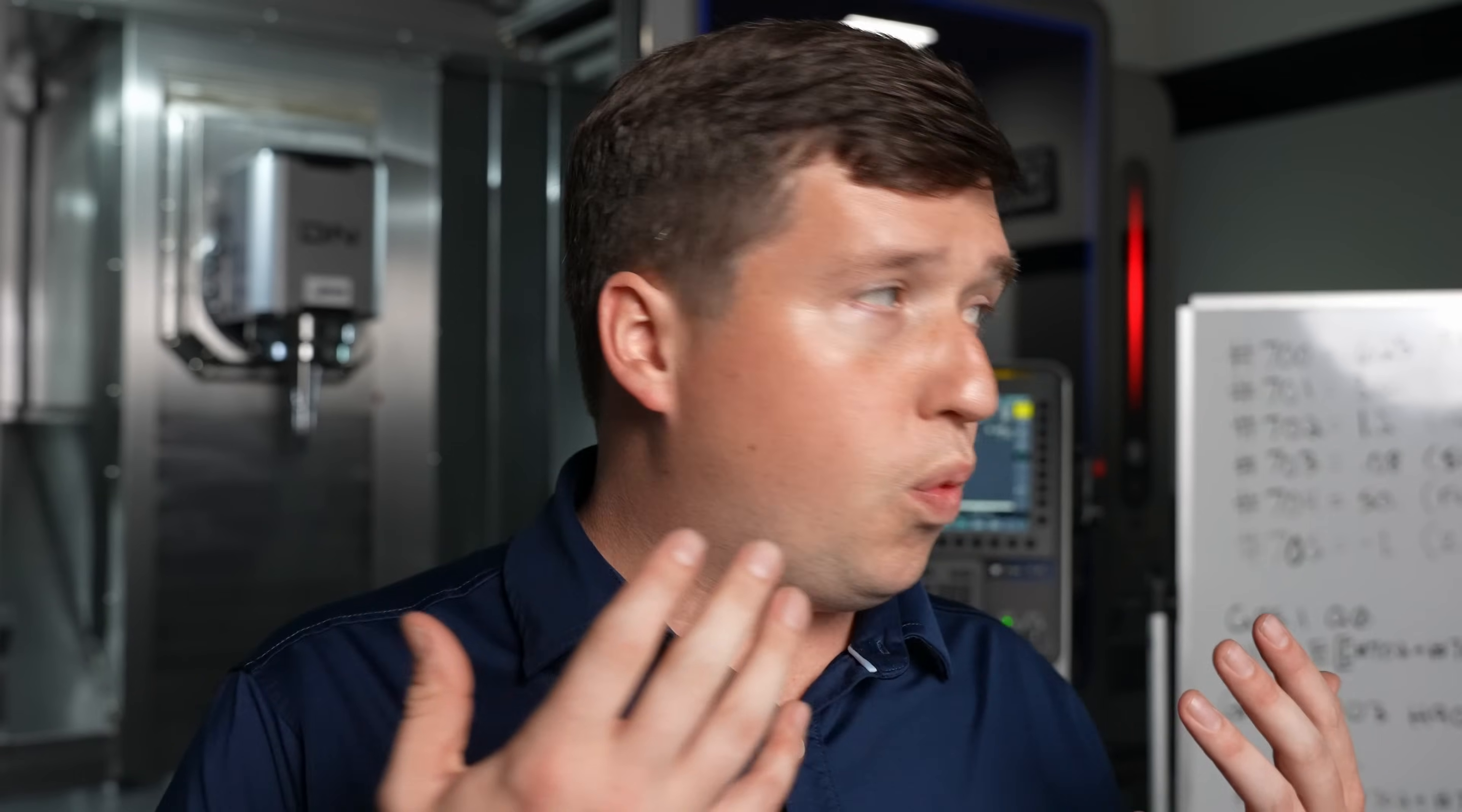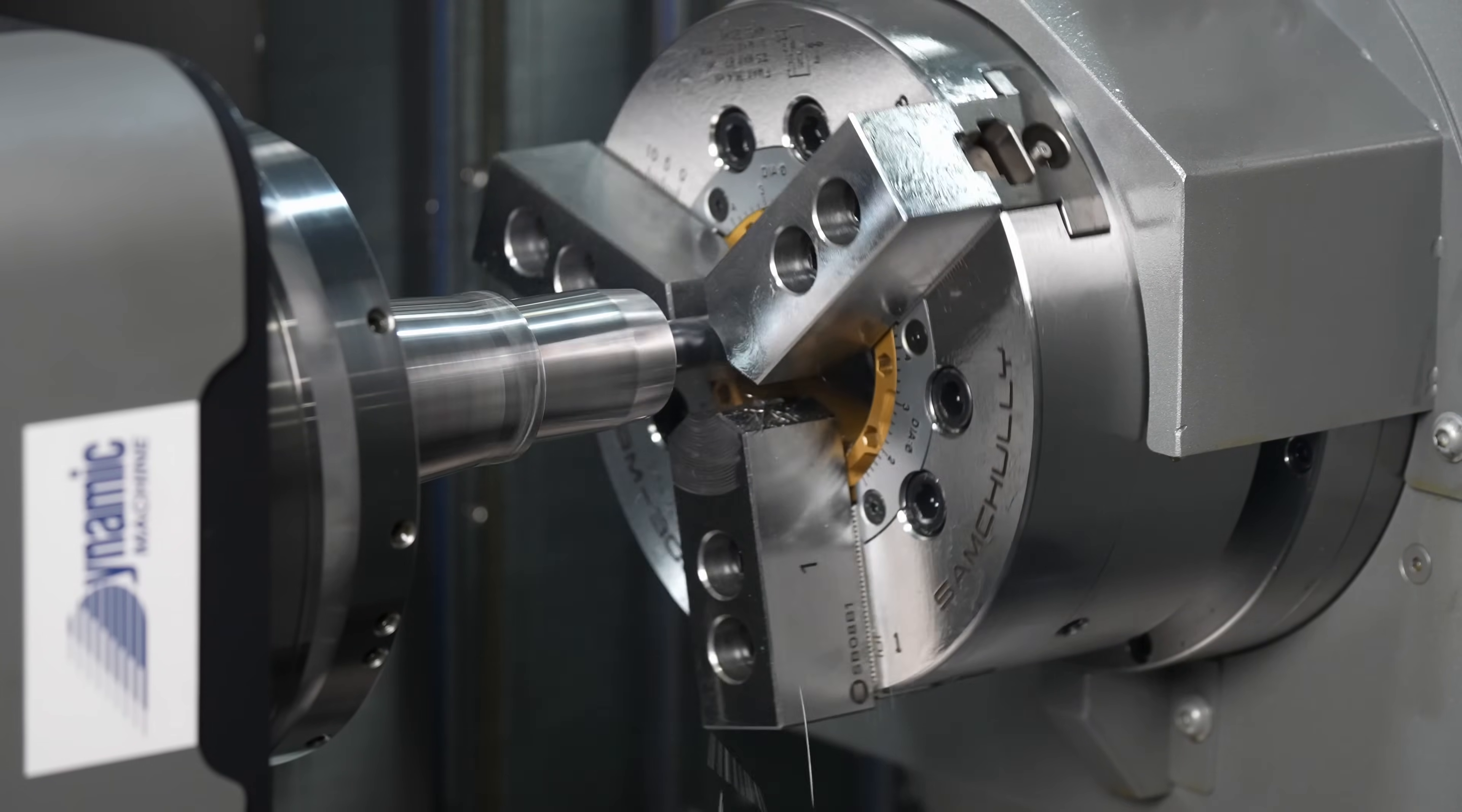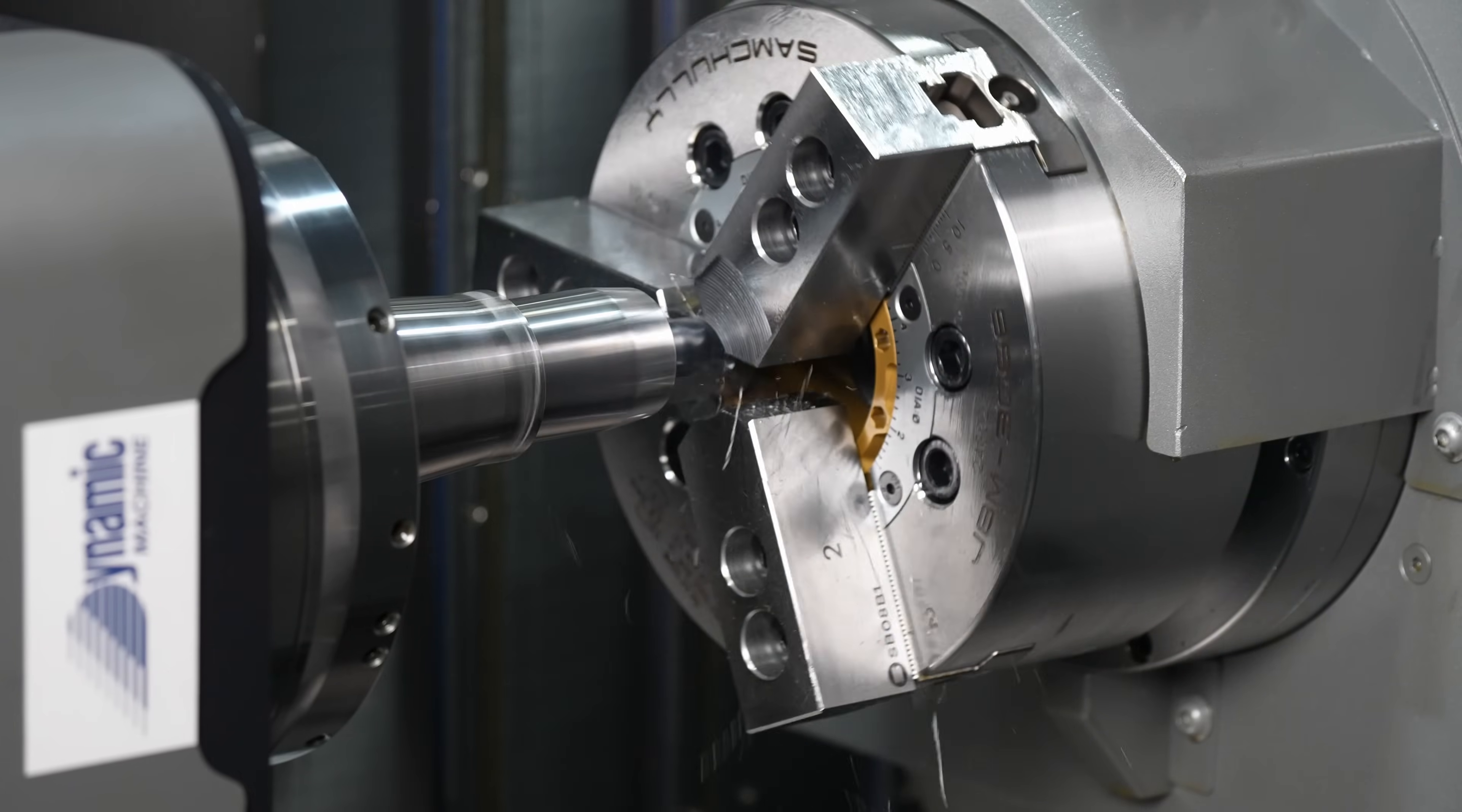So really with this macro all you have to do is plug in two diameters and it will take care of the rest for you. It's going to continue a loop that rotates your spindle 360 degrees while moving x up every single time. So without further ado let's get into the macro.